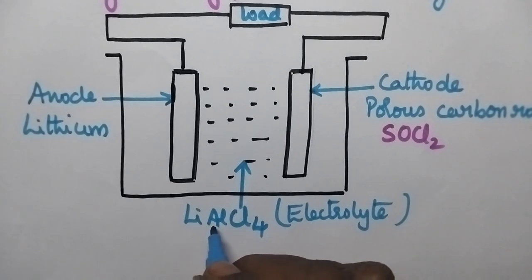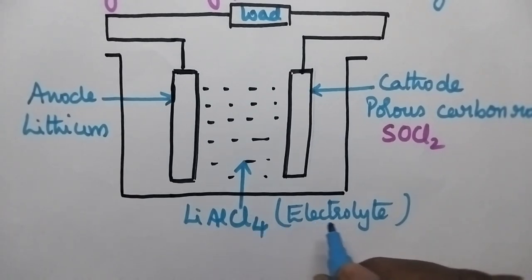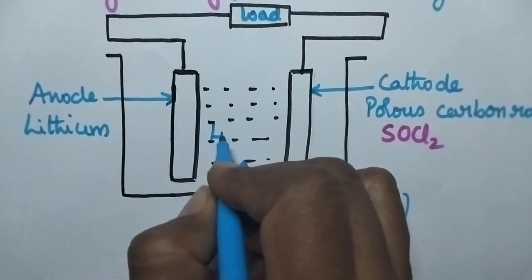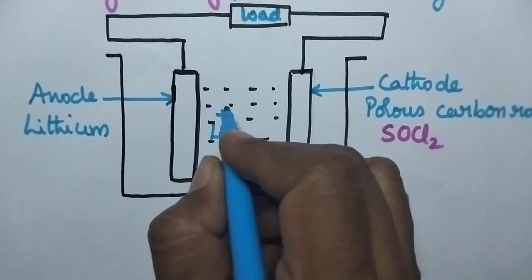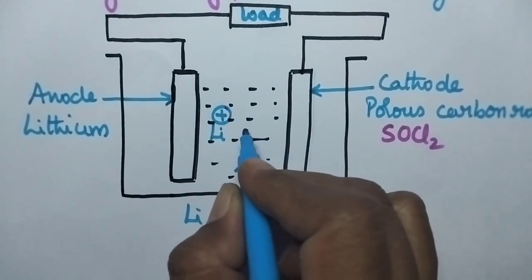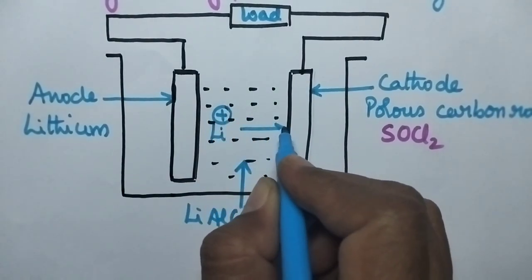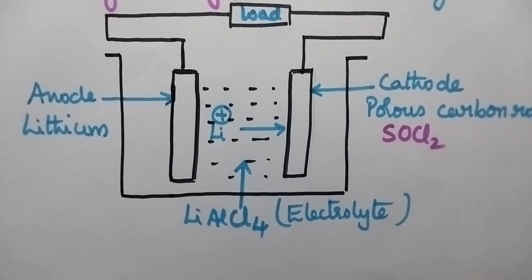Lithium aluminum tetrachloride acts as the electrolyte. During the chemical reaction, lithium ions always travel from anode to cathode.